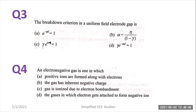Here α is known as Townsend's primary ionization coefficient and γ is the Townsend's secondary ionization coefficient. Let us discuss question number four: an electronegative gas is one which — which would be the right answer? Option A: positive ions are formed along with the electrons. Option B: the gas has an inherent negative charge. Option C: gas is ionized due to electron bombardment.